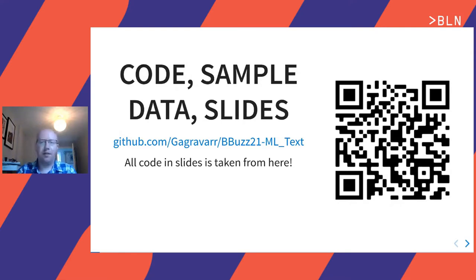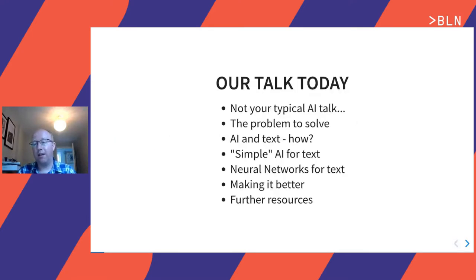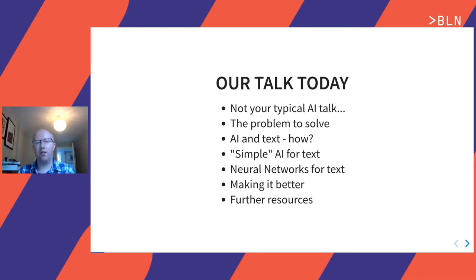Our talk today is not going to be your typical AI talk because it's about text. We're going to start off looking at some of the key things you need to know when you're working with AI and text. We'll build a simple little AI for text, try and make it better with some neural networks and some word embeddings. And importantly, at the end I have a whole bunch of resources for you — so later on you can go through those resources, read up and get to know it all a bit better.